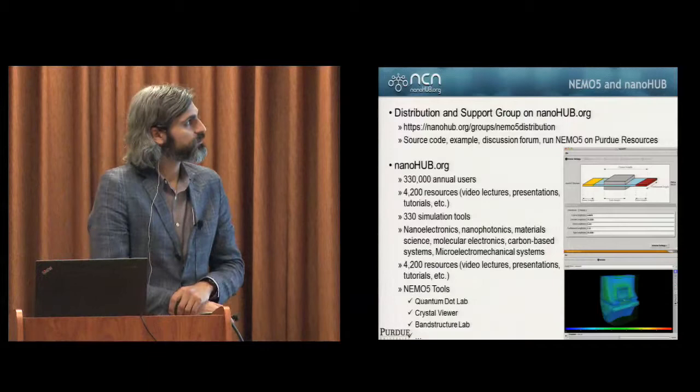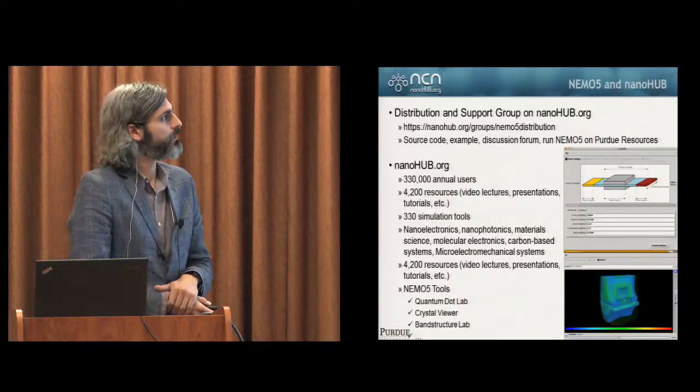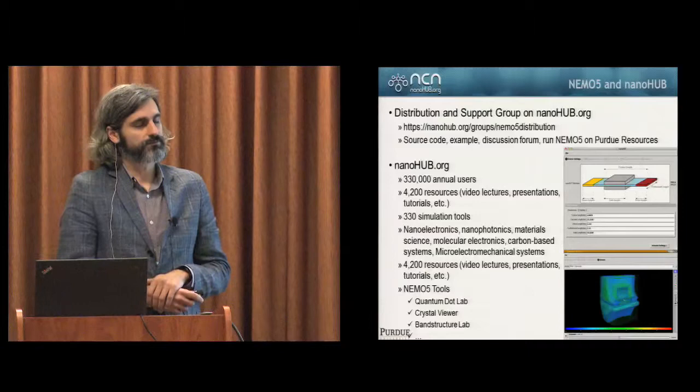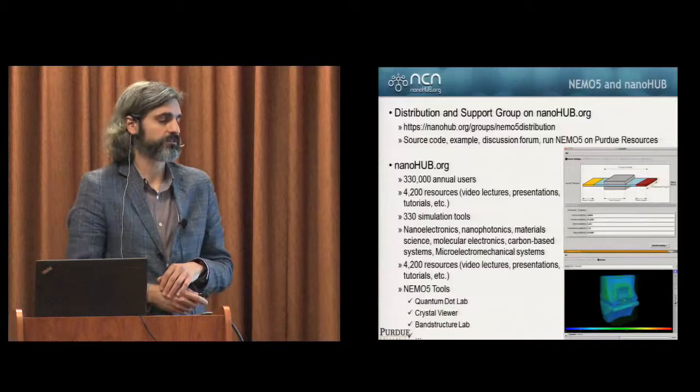Just a quick slide on NEMO5 and its relation to NanoHub. NEMO5 is free to use for academic research, you can download it, we've got a support group. In fact you can run NEMO5, a precompiled binary on Purdue resources as well. NanoHub.org is a cyber infrastructure for science. It's got quite a few users, a lot of the resources, and all these resources are committed by the community.